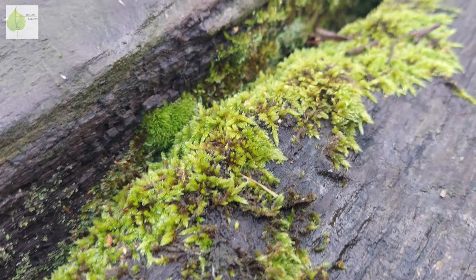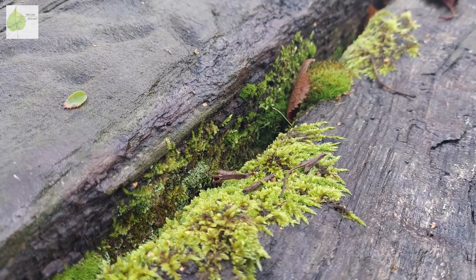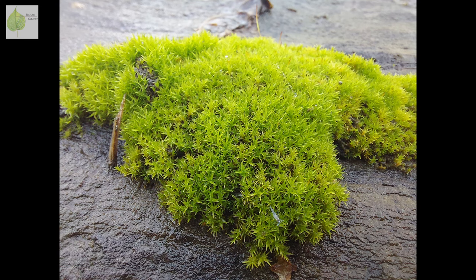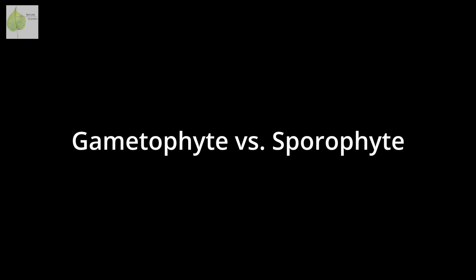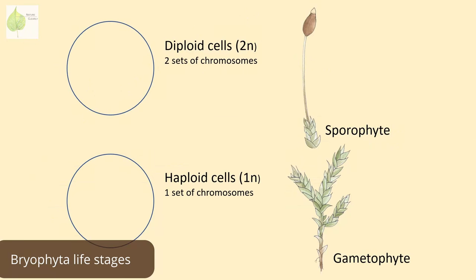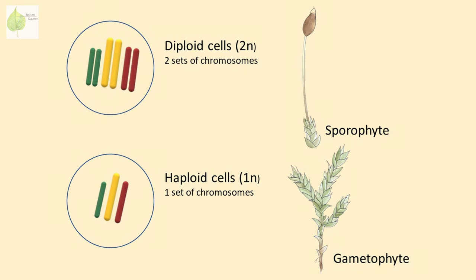Let's start with the moss life stage we observe most commonly — those round green mounds or spreading mats with short leafy shoots. This is the longest lived and most conspicuous stage of the moss life cycle: the gametophyte. In the alternation of generations, the gametophyte stage is one in which a plant's cells have only one set of chromosomes — we call this haploid or 1n — and the sporophyte phase is one in which their cells have two sets of chromosomes, one from each parent, called diploid or 2n.